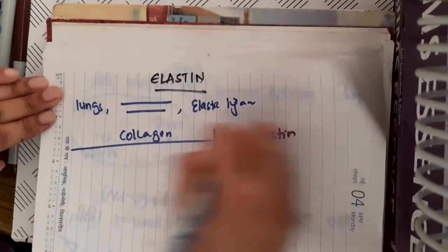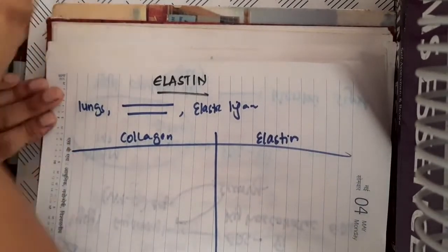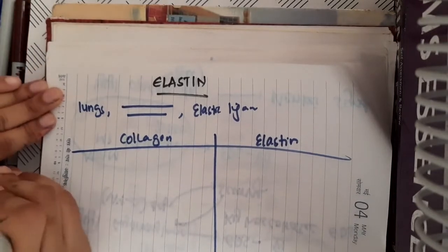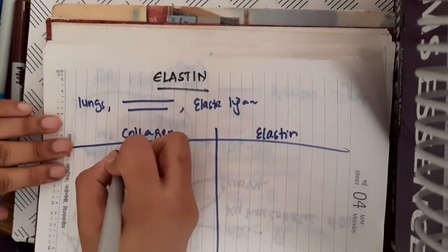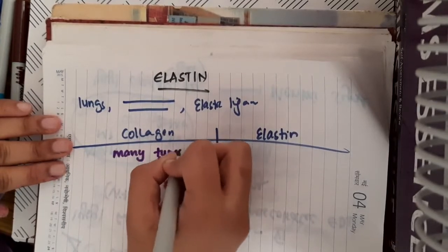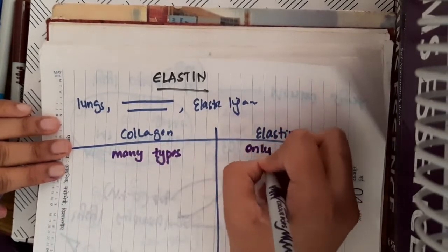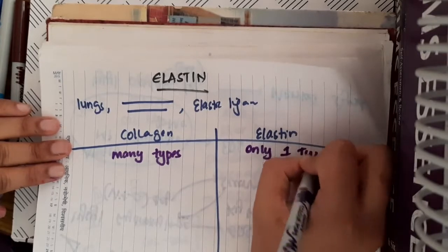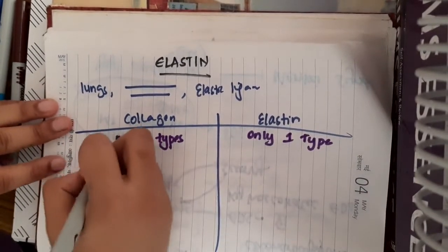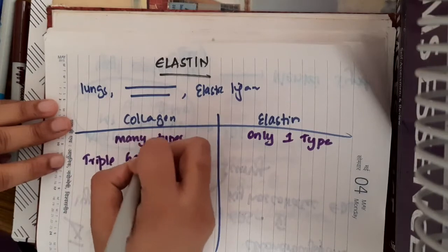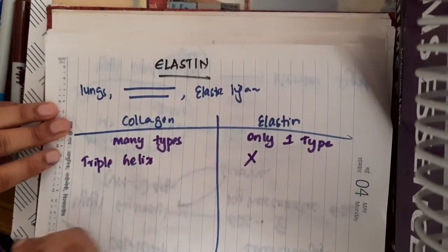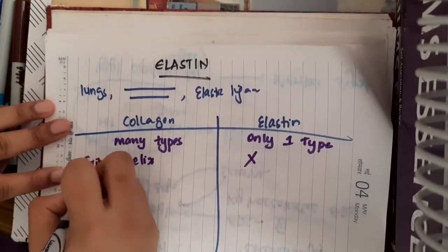This will make our work of learning elastin easier. In collagen, there are many types present. Whereas in elastin, only one type of elastin is present. Collagen has a triple helix structure, whereas elastin does not have a triple helix structure.